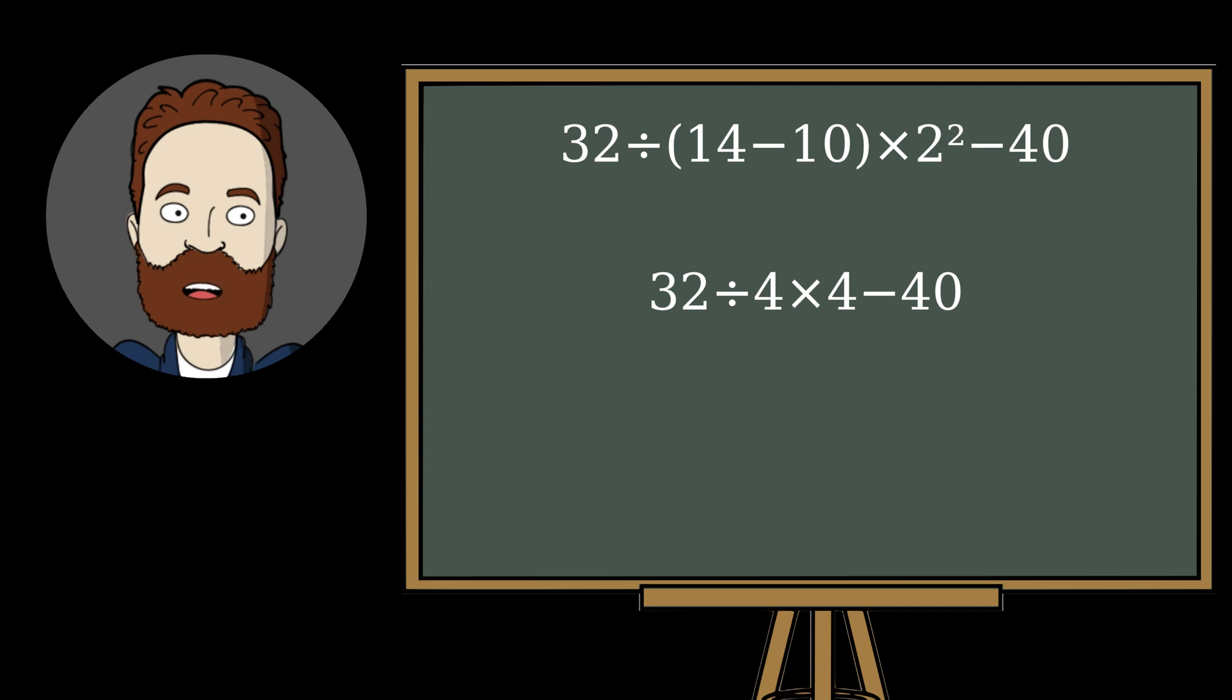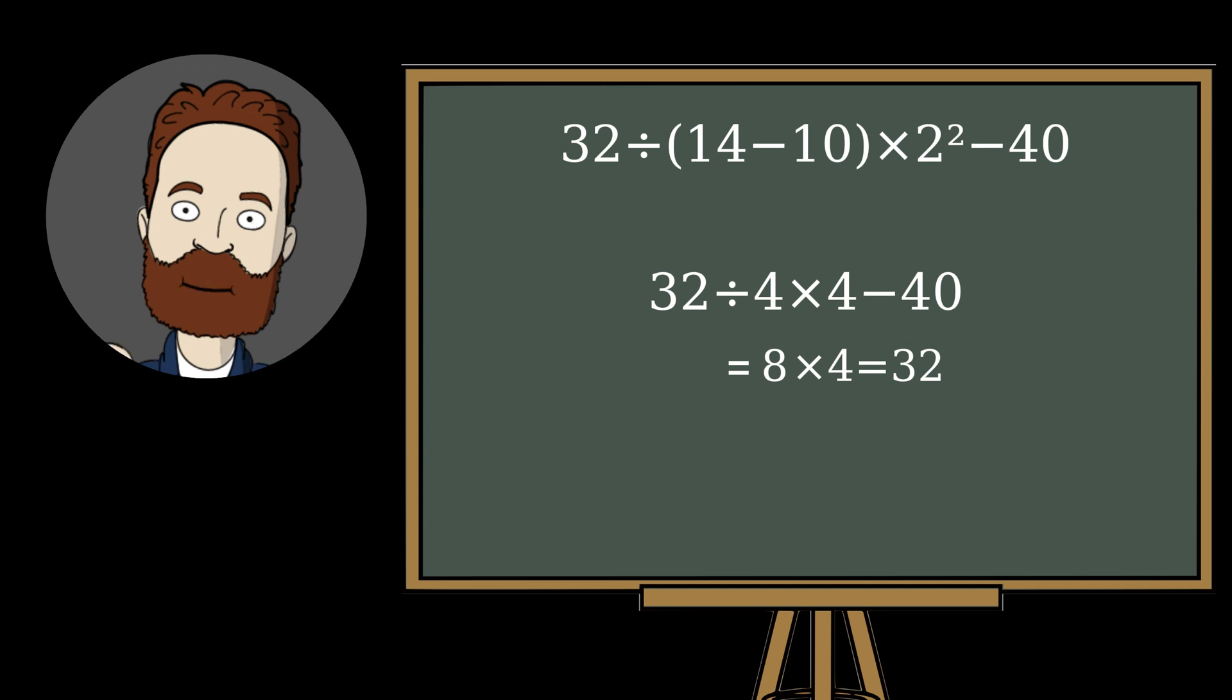Now we proceed from left to right. 32 divided by 4 equals 8. Then 8 times 4 equals 32. What remains is subtraction. 32 minus 40 equals minus 8. So the correct answer is minus 8.